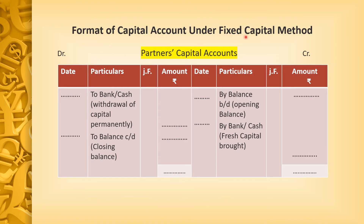Format under Fixed Capital Method — as told earlier, in the Fixed Capital Method we prepare two accounts: first is the Capital Account and second is the Current Account. In the Partner Capital Account, no items are included except one — By Balance B/D, which is the opening balance given in the question. To make both sides equal, we write To Balance C/D. In 99.99% of cases, fresh capital brought by bank/cash will not appear; it is simply By Balance B/D and To Balance C/D — a one-line account.